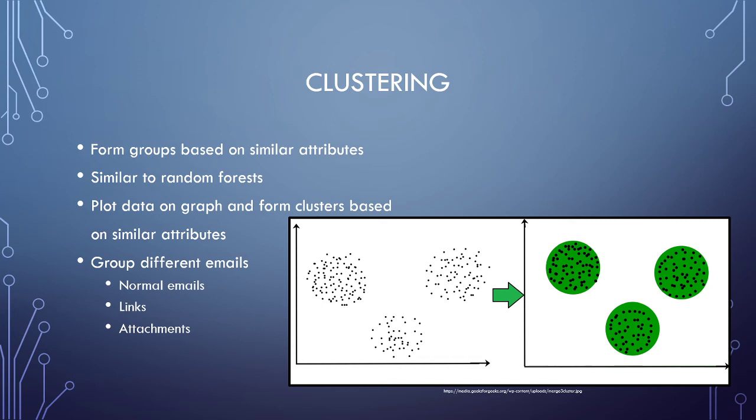So like I said, you'll go ahead and plot your data set onto a graph. And after all the points have been plotted on the graph, you'll take a look at where everything is located. And from this, you can form different clusters, as you can see in the photo. We have three different clusters from these data points.